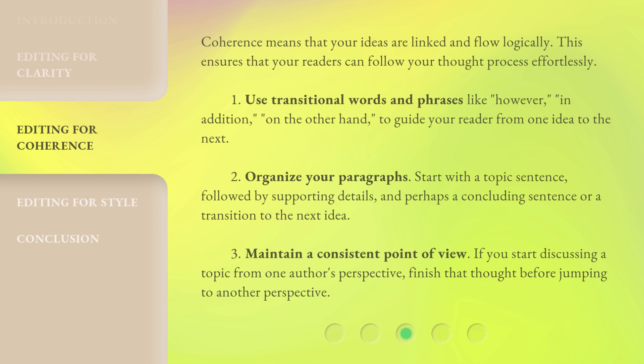Coherence means that your ideas are linked and flow logically. This ensures that your readers can follow your thought process effortlessly. First, use transitional words and phrases like 'however,' 'in addition,' 'on the other hand,' to guide your reader from one idea to the next. Second, organize your paragraphs: start with a topic sentence, followed by supporting details, and perhaps a concluding sentence or a transition to the next idea. Third, maintain a consistent point of view. If you start discussing a topic from one author's perspective, finish that thought before jumping to another perspective.